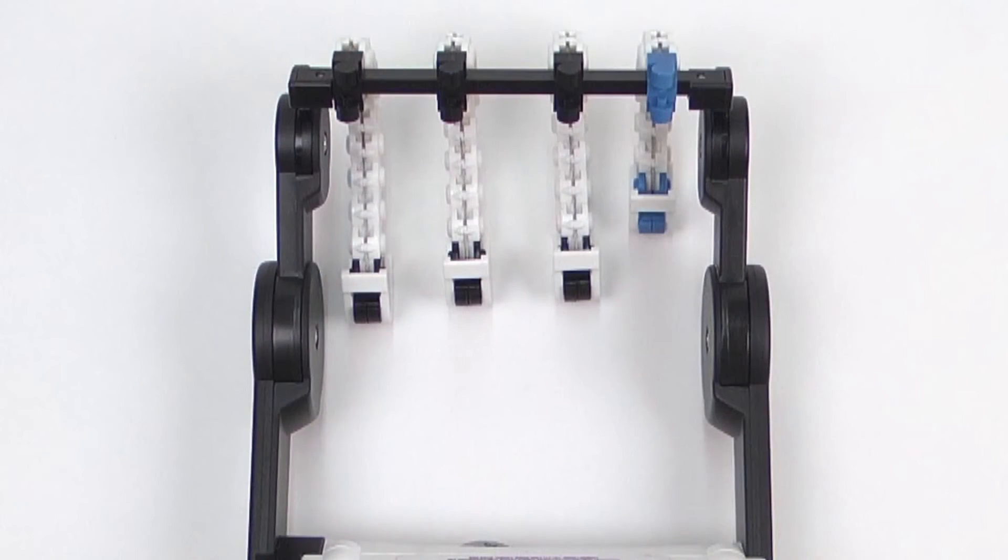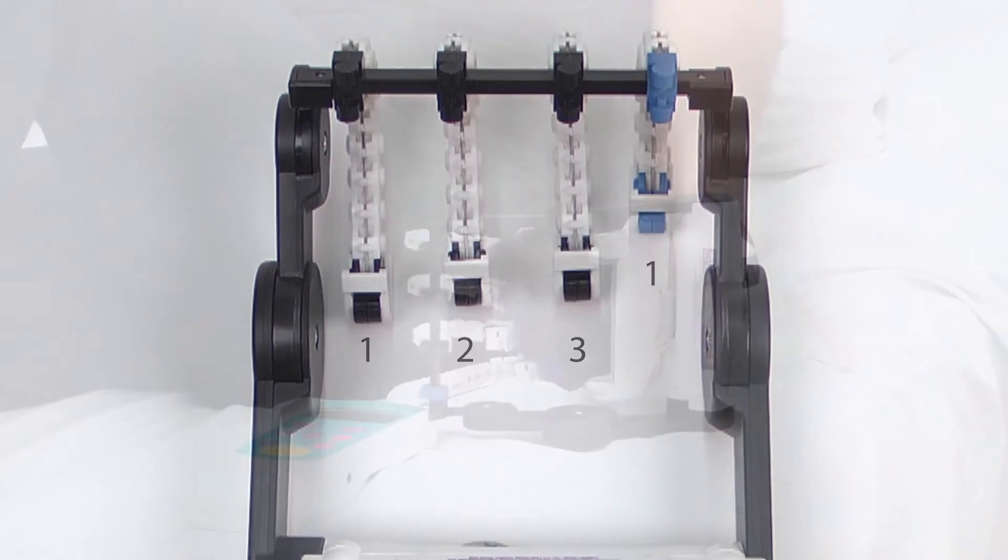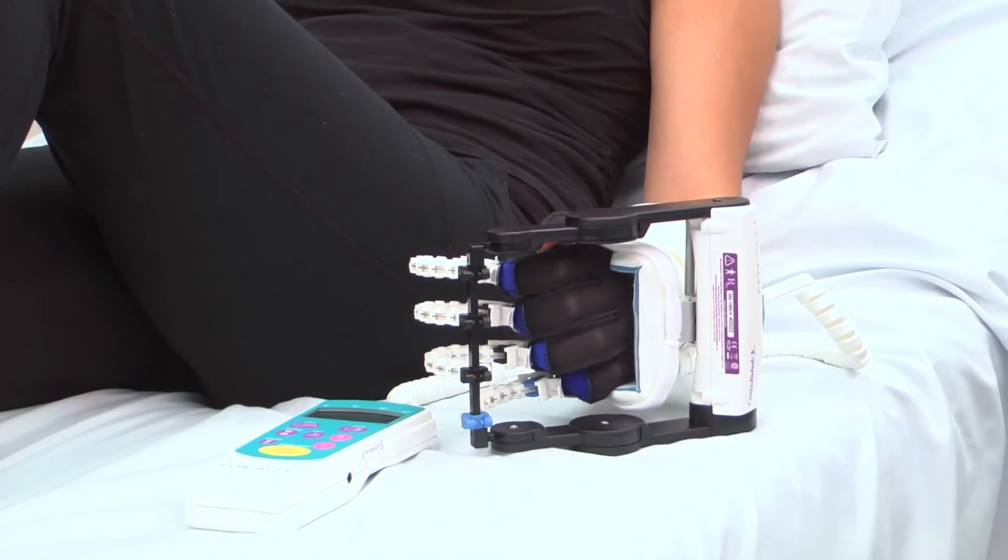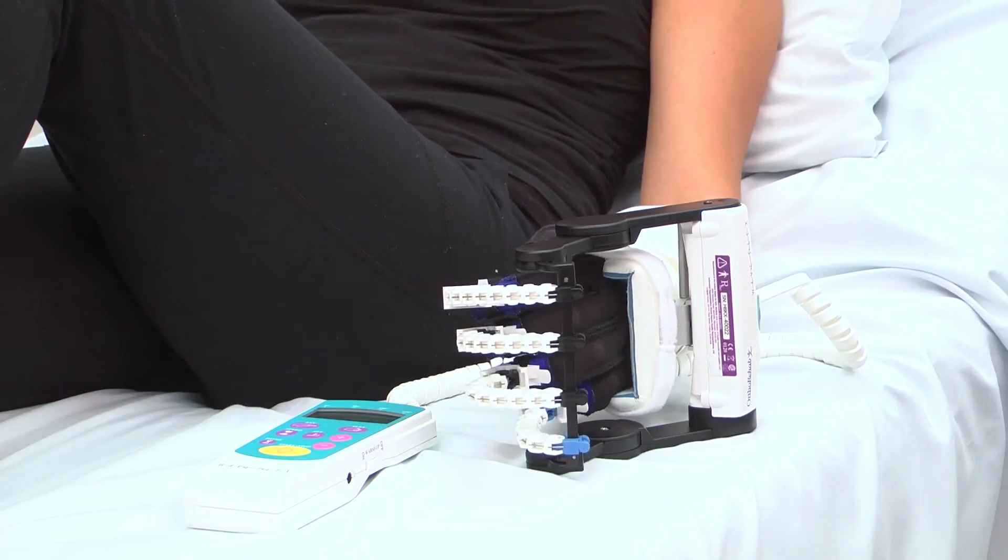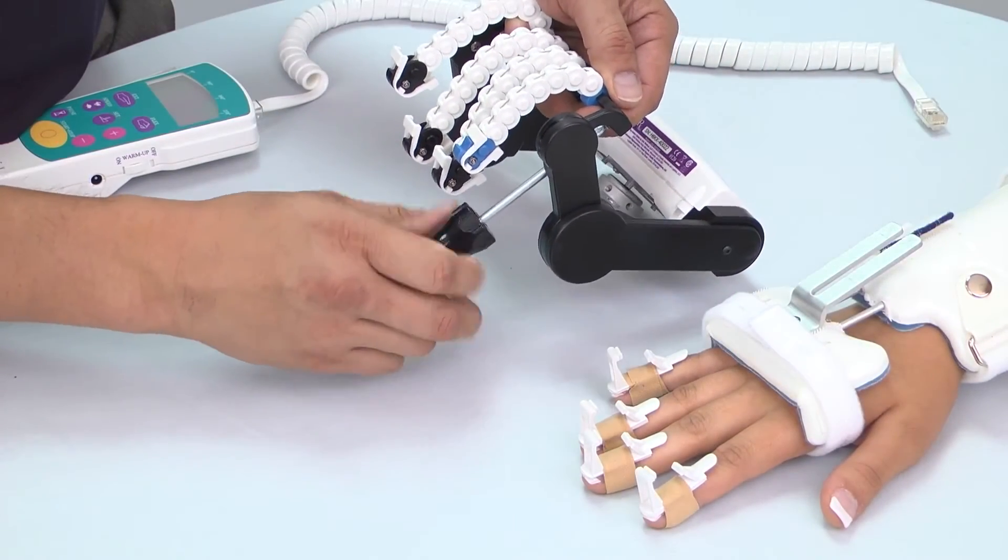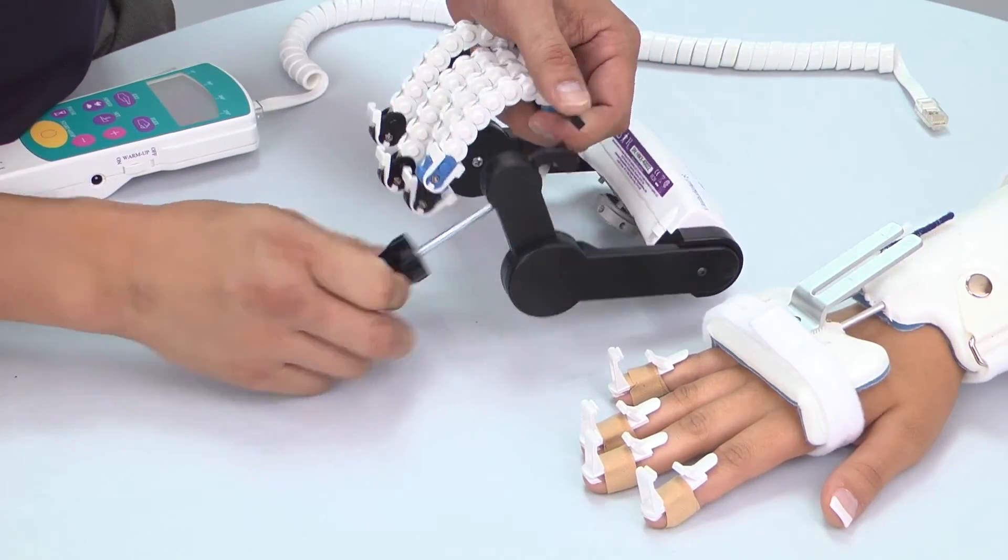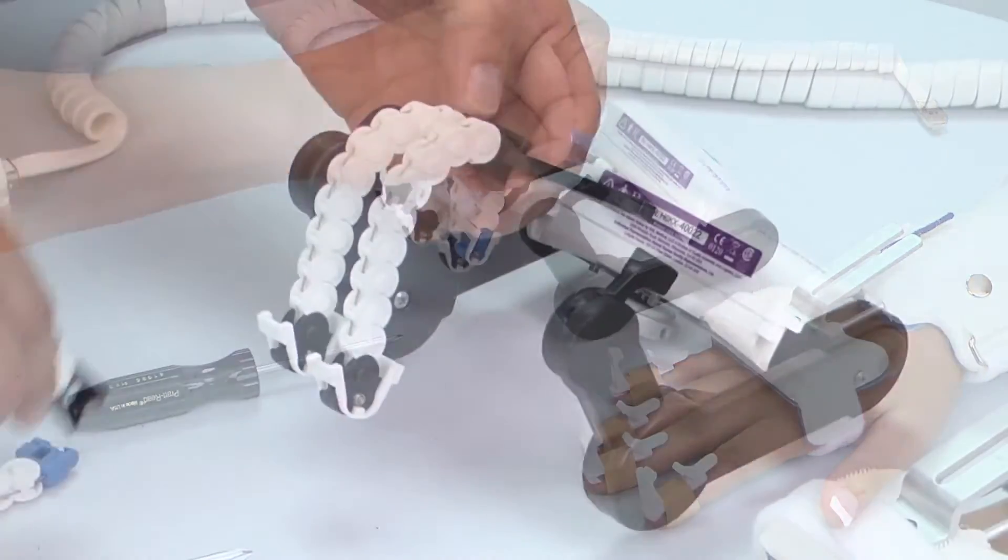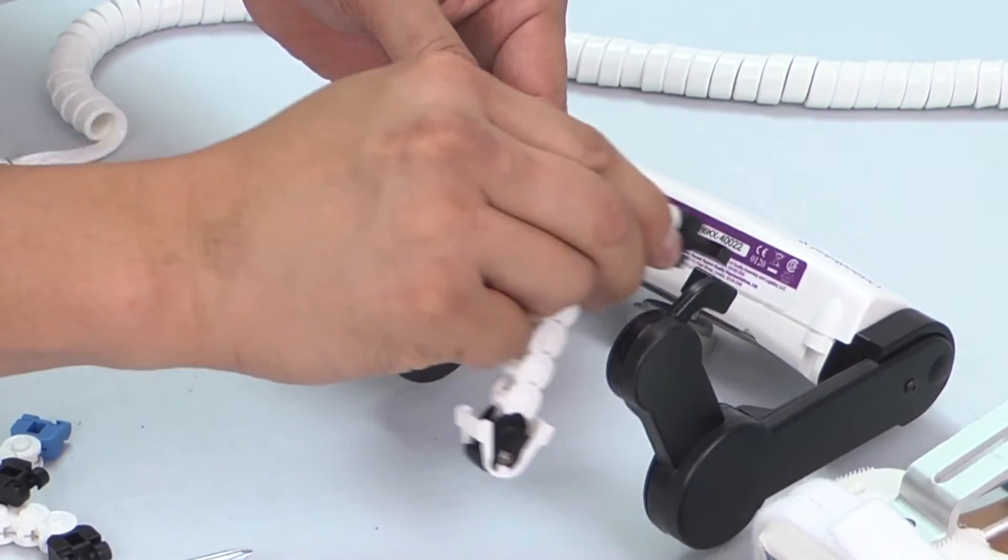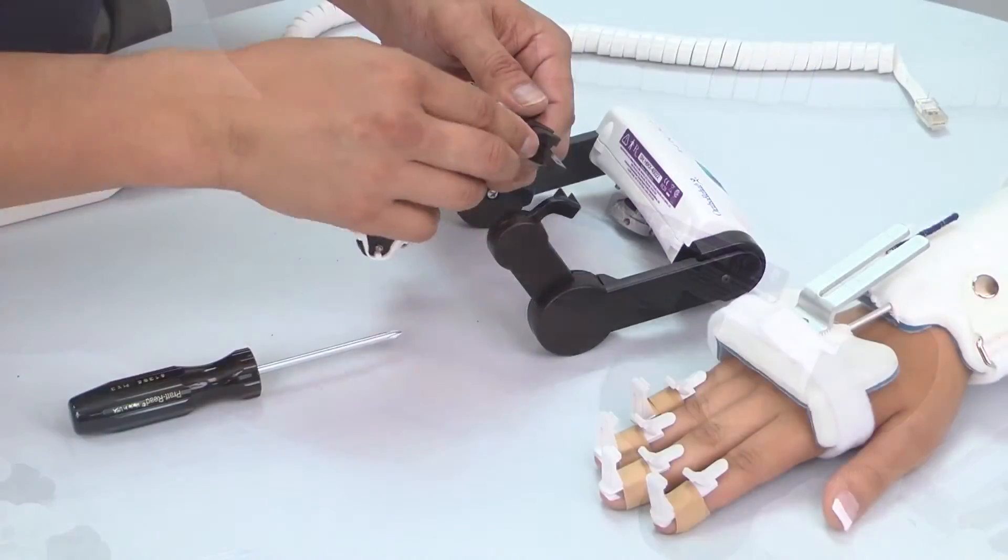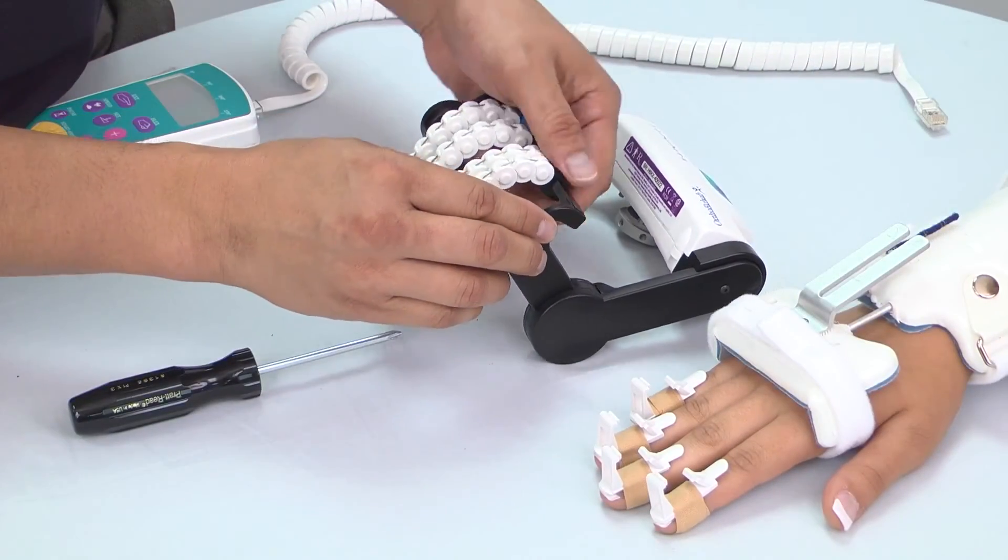The 6000X WaveFlex comes equipped with three medium-sized finger actuators and one small-sized finger actuator. Additional finger actuators in small, medium, and large sizes are available separately. To replace or rearrange finger actuators for a left or right hand setup, remove the black actuator bar with a Phillips screwdriver and slide the finger actuators off the bar. Rearrange or replace as desired.